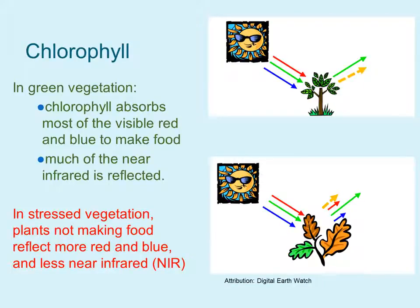Let's take a closer look at chlorophyll. In green vegetation, chlorophyll absorbs most of the visible red and blue to make food for the plant, while much of the near infrared is reflected. However, in stressed vegetation — shown in the bottom right image — plants do not make food or very much food, and as a result they reflect more red and blue and less near infrared.